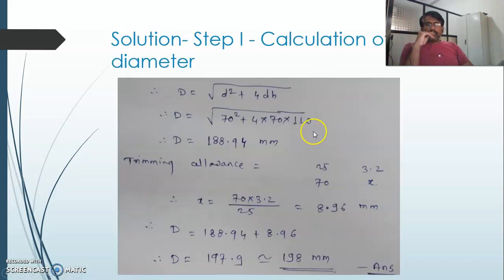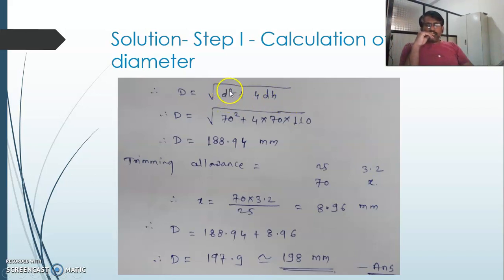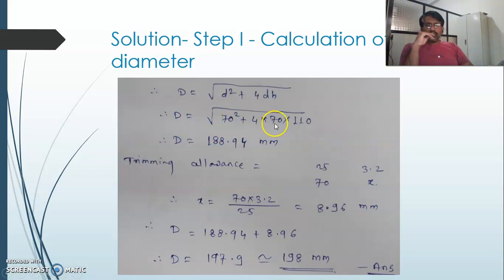The first step is the calculation of the blank diameter. This can be carried out with the formula: blank diameter D = √(d² + 4dh), where small d is the shell diameter. Knowing the shell diameter is 70 mm and height h is 110 mm, we get: √(70² + 4×70×110) = 188.94 mm.